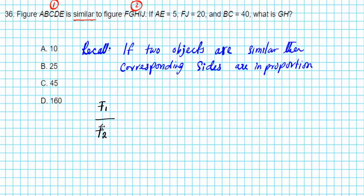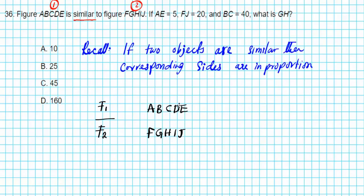That's going to help us keep track of our sides. Figure one is described using the vertices A, B, C, D, E, and figure two is F, G, H, I, J. You have to be careful with the alphabets — you must maintain the same sequence that's provided in the problem. AE goes from first to last, and FJ goes from first to last.